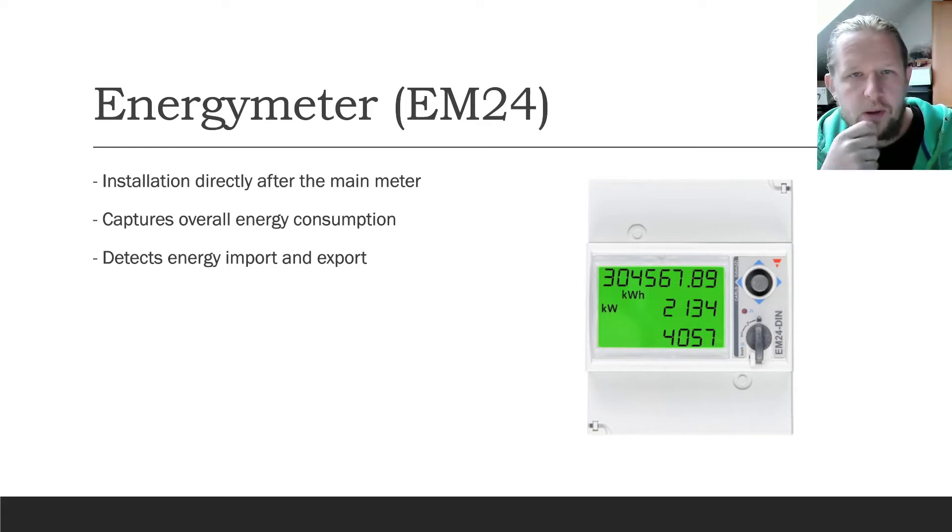First of all, I will show you the different units that are important for the system. One essential thing is the energy meter. The energy meter is installed directly at the main meter and so it captures the overall energy consumption or feed-in. So it detects whether we import or export energy at the moment and so it controls the rest of the system.